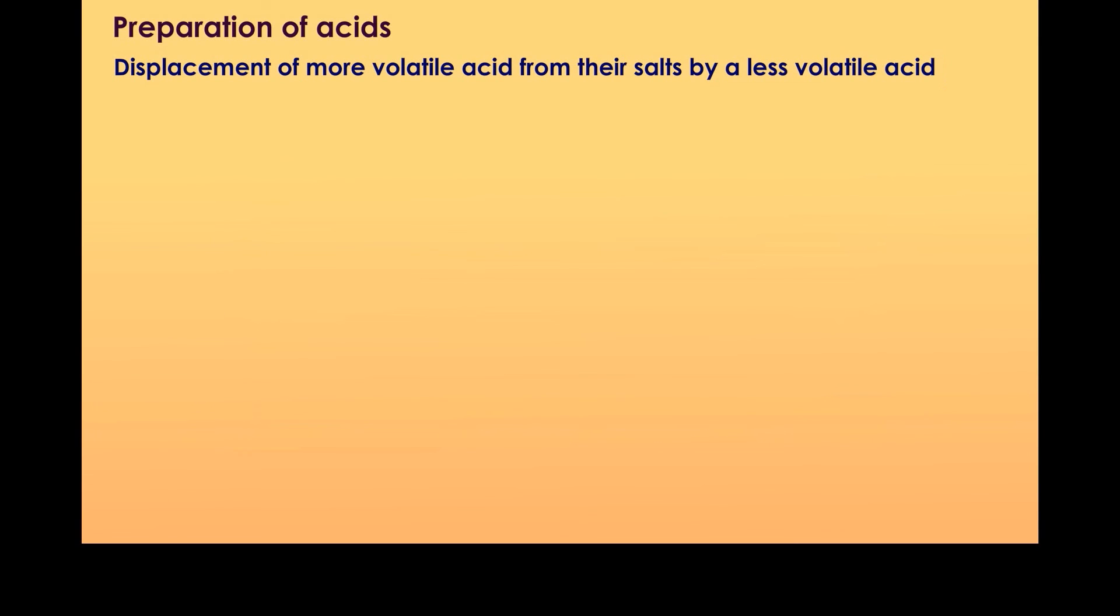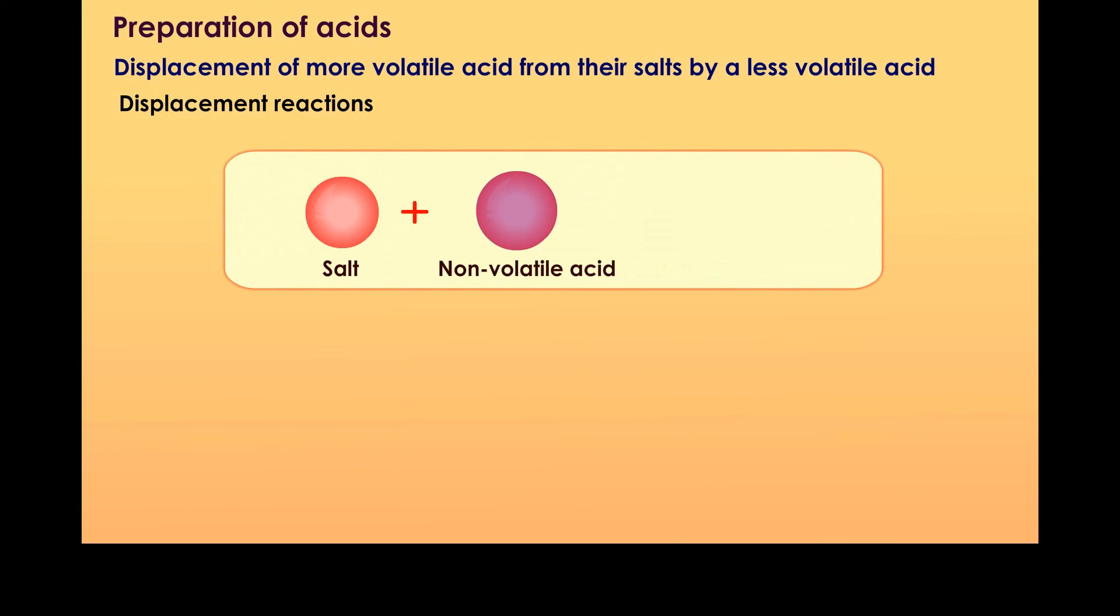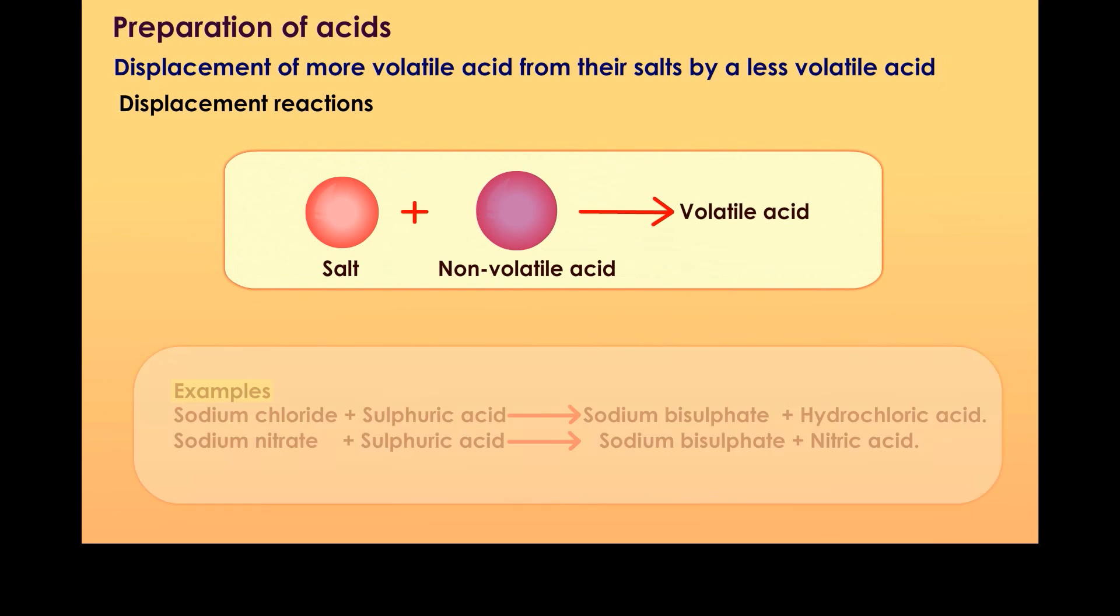Displacement of more volatile acid from their salts by a less volatile acid. Displacement Reactions: Salt plus non-volatile acid gives volatile acid. Examples: Sodium chloride plus sulfuric acid forms sodium bisulfate and hydrochloric acid. Sodium nitrate and sulfuric acid form sodium bisulfate and nitric acid.